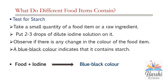What do different food items contain? We can test by using some simple methods. We know that food contains nutrients along with dietary fiber and water. For that, we need some chemicals — those are iodine, copper sulfate, and caustic soda, along with test tubes and a dropper. Test for starch: what is starch? Starch is a type of carbohydrate. There are many types of carbohydrates. The main carbohydrates found in our food are in the form of starch and sugars. The sources of starch are rice, wheat, and tubers.